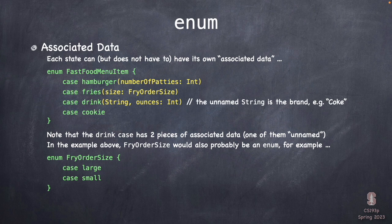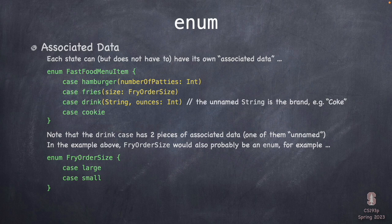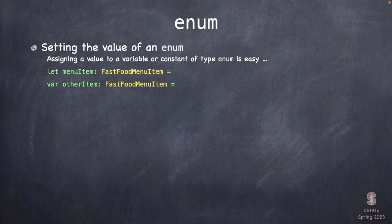What makes enums really incredible in Swift is that you can associate data with each case. For a hamburger, I might want to know if it's a single or double patty — an integer associated with that case. Fries might have a size (another enum). A drink has two pieces of information: the brand (String) and the ounces (Int). These are named kind of like function parameters, though with just one name — and that name is optional.